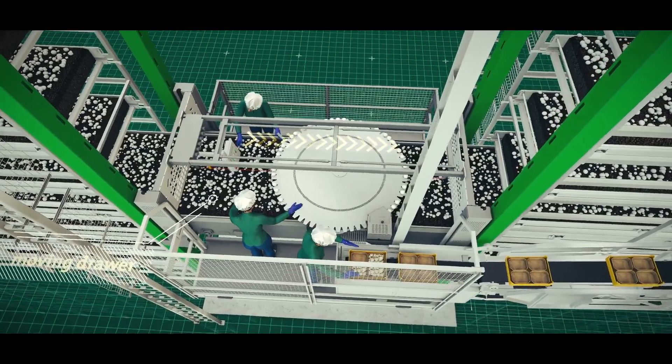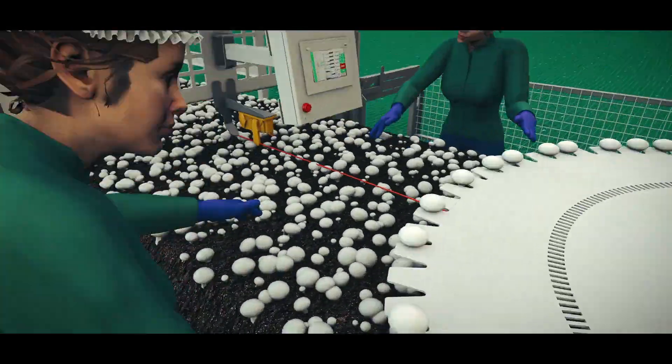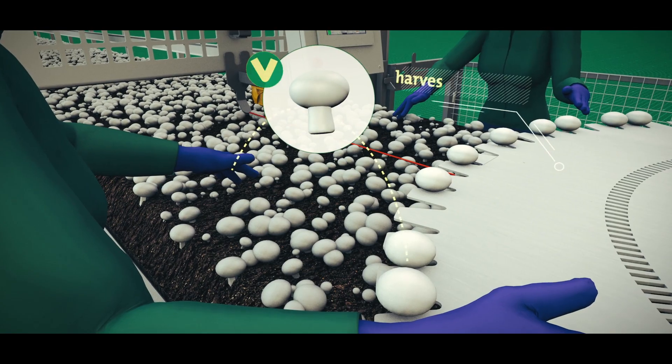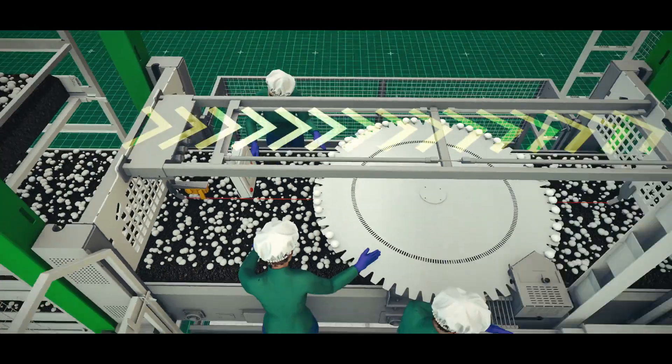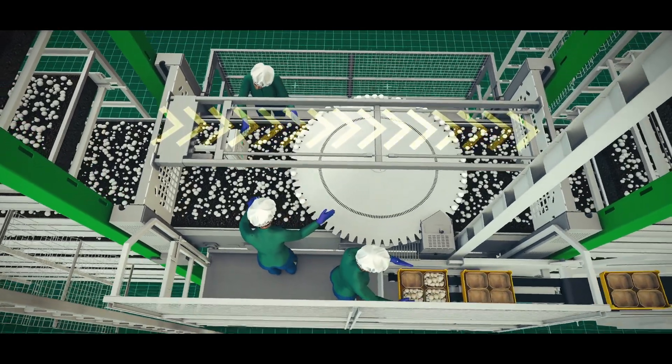The drawer passes slowly in front of the pickers, allowing them to pick the mushrooms of the right size and place them in the harvesting disk. The travel speed is adjustable in accordance with the amount of mushrooms to pick.